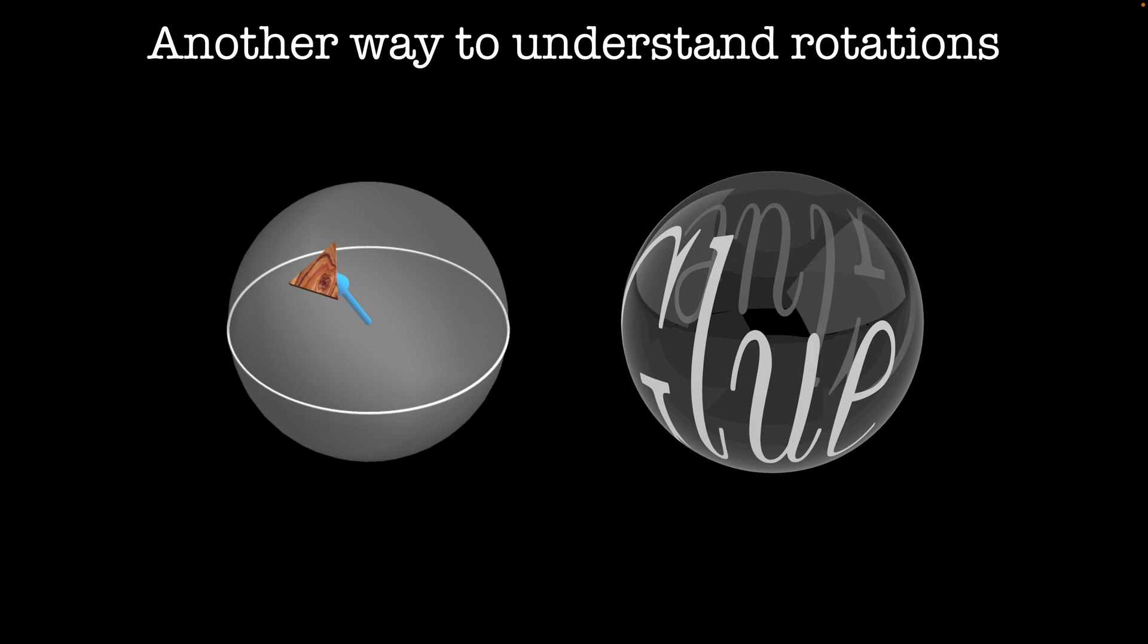S3 is the unit sphere in four dimensions, but you can think of it as all of Euclidean space where you take the points at infinity and glue them together. Points in S3 are described by quaternions. We'll get back to both of these descriptions in a minute.